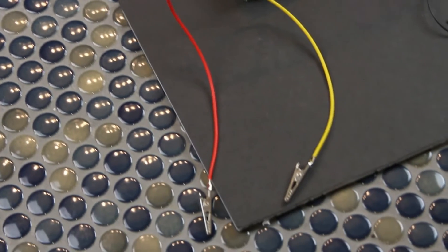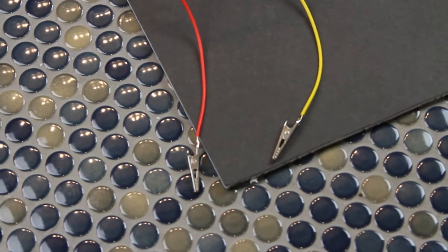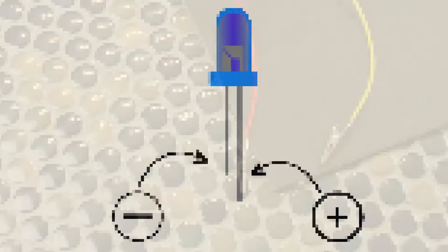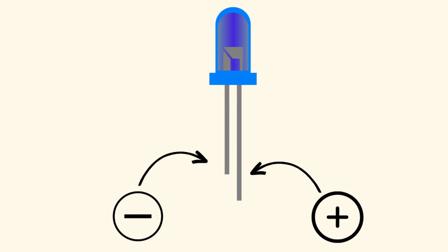If you do use the same color wires, make sure you can keep tabs on which one is connected to the positive and the negative end of the solar panel. And we say that because remember, the LED we're using also has positive and negative sides to it.